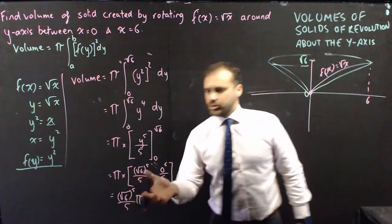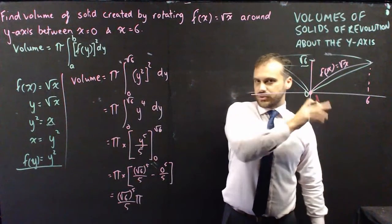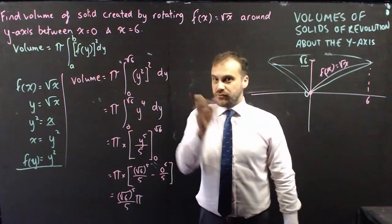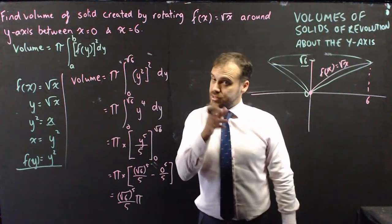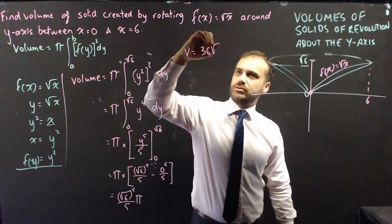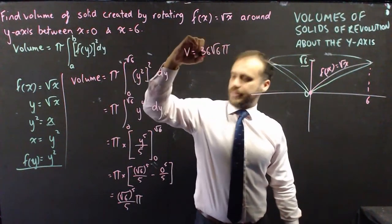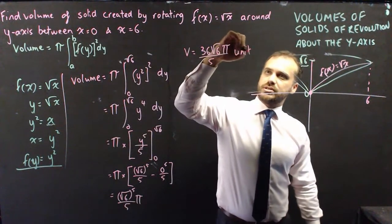I can simplify this a little bit further. Root 6 to the 5 is the same as root 6 to the 4 times root 6, and root 6 to the 4 is the same as root 6 squared squared. Root 6 squared is 6, 6 squared is 36. I can say that the volume is equal to 36 root 6 pi over 5, and that's units cubed.